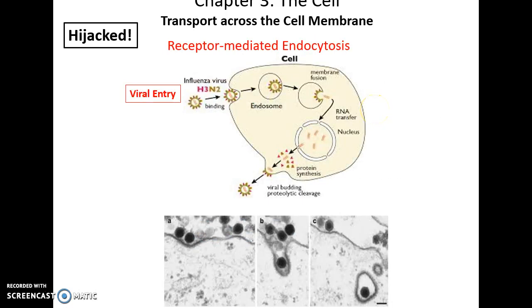Receptor-mediated endocytosis can be hijacked by viruses. Viruses can bind to those receptors, pretending to be the desired substance, tricking the cell to bring them in, where the virus will then take over the cell's functions to produce many, many more viruses. That was Part 1 — I hope you enjoyed it.